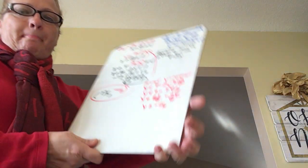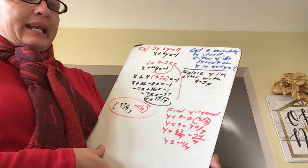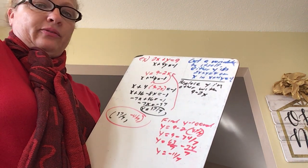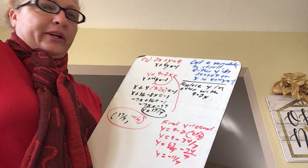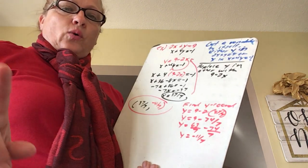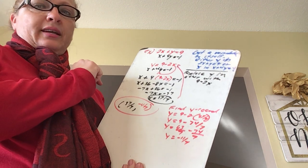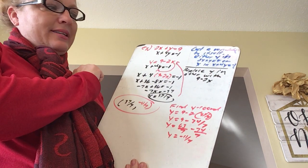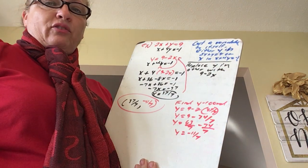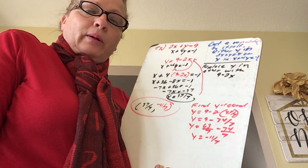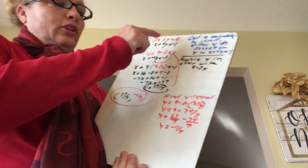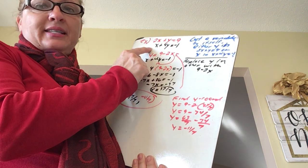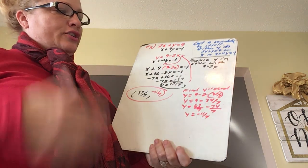Now let's look at the last example: 2x plus y equals 9, and x plus 4y equals negative 1. In the other three examples, one equation had a variable already by itself. Here we have to rearrange one equation to get a variable by itself. The key is looking for a variable with a coefficient of 1 — like a ghost coefficient. In the first equation I can get y by itself by subtracting 2x, giving y equals 9 minus 2x. I could also have written it as negative 2x plus 9.